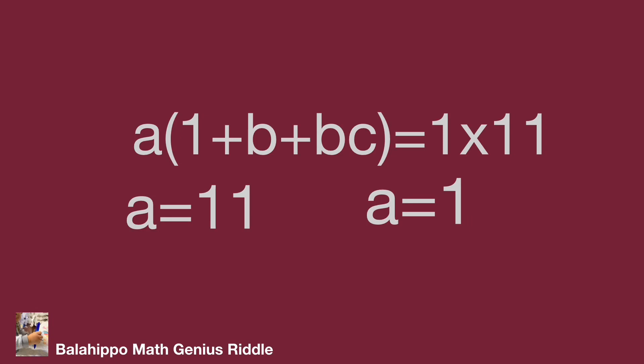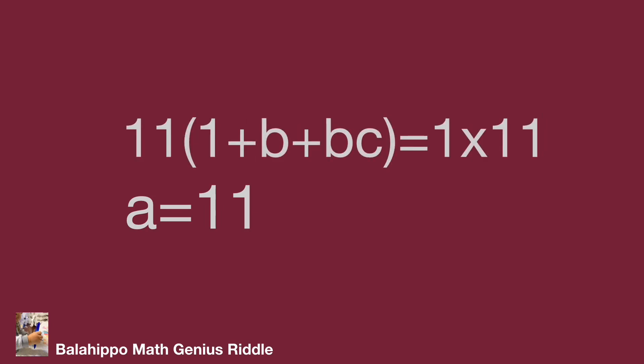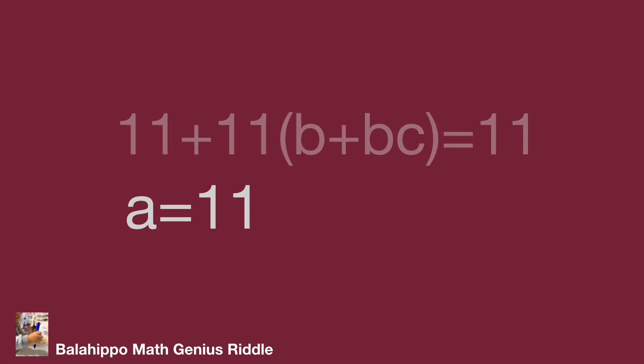When a equals 11, substitute a by 11 to the equation as 11 times bracket 1 plus b plus bc bracket equals 1 times 11. The value of it becomes 11 plus 11 times bracket b plus bc bracket equals 11.